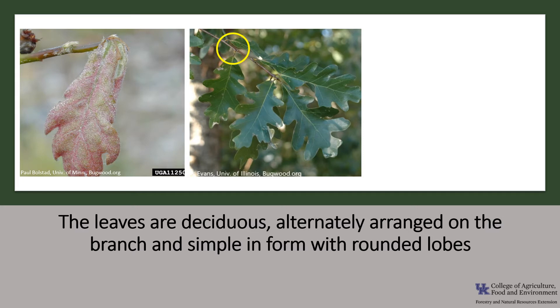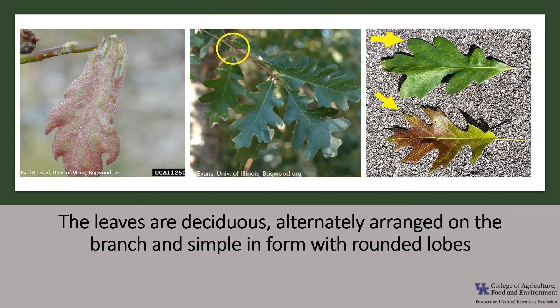You can tell white oak leaves from red oak leaves by the lobes. The lobes of the white oak leaf, as you can see in the top photo here, are rounded. The lobes of the red oaks, as you can see in the bottom photo, have a bristle tip on them.